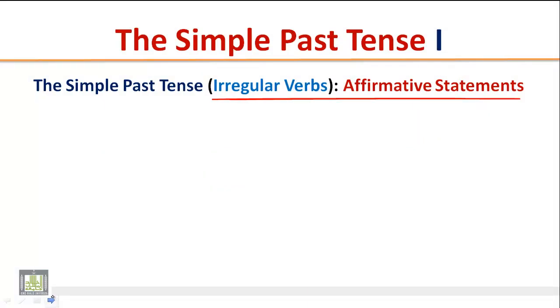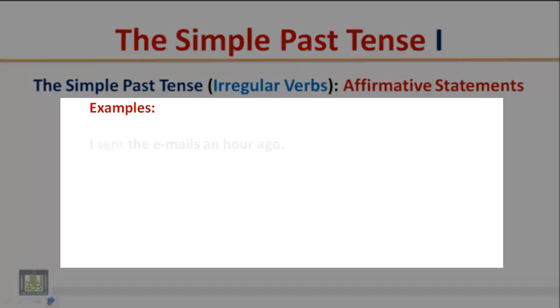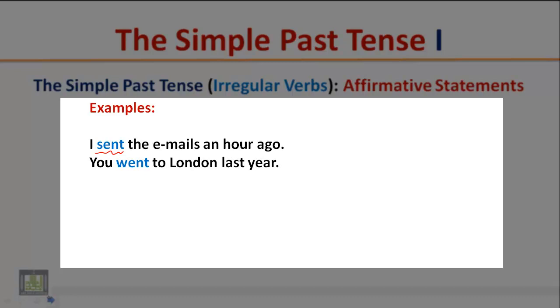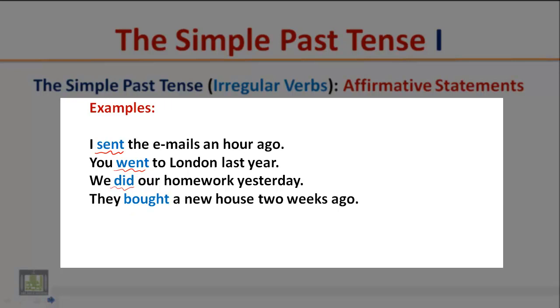The Simple Past Tense: Irregular Verbs, Affirmative Statements. Examples: I sent the emails an hour ago. You went to London last year. We did our homework yesterday. They bought a new house two weeks ago.